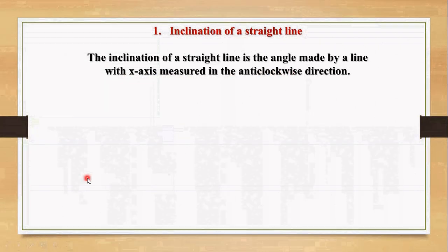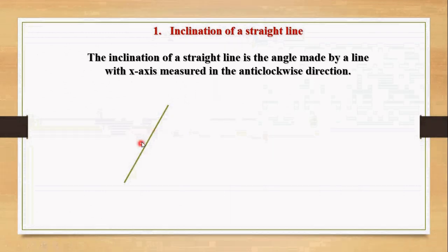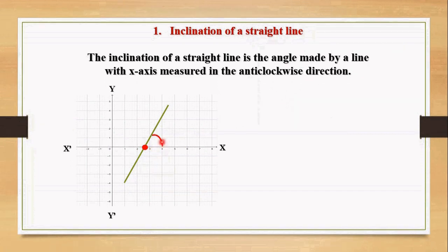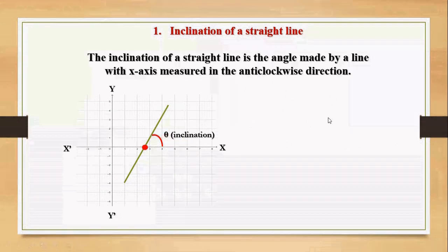Now let's measure the inclination of a straight line. For this we need a coordinate axis. Let's take the intersection of a line and the x-axis. Inclination is measured at this point — from the right portion of the x-axis, the angle measured in the anticlockwise direction with the line, theta, is the inclination of this straight line.